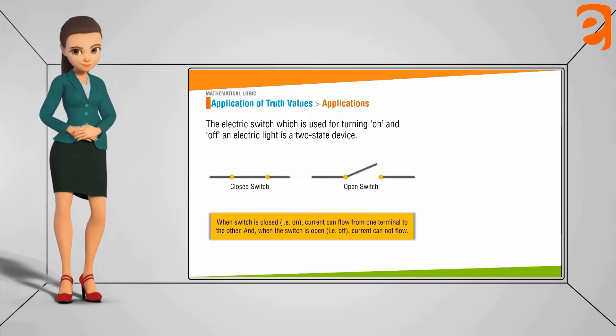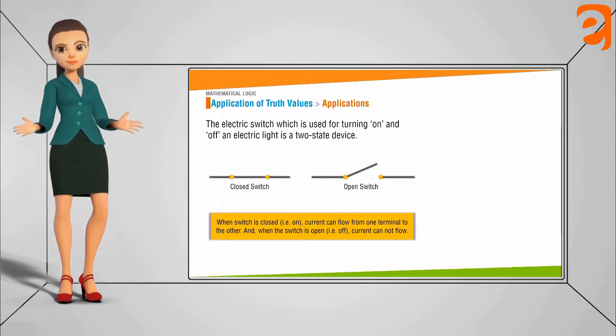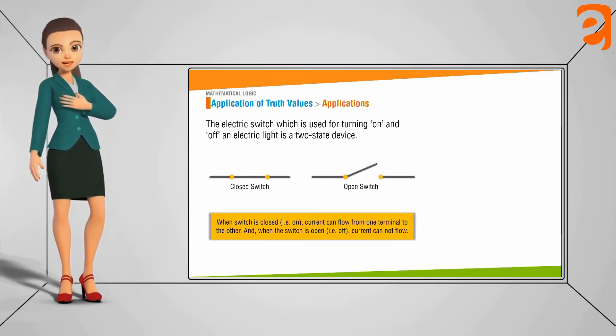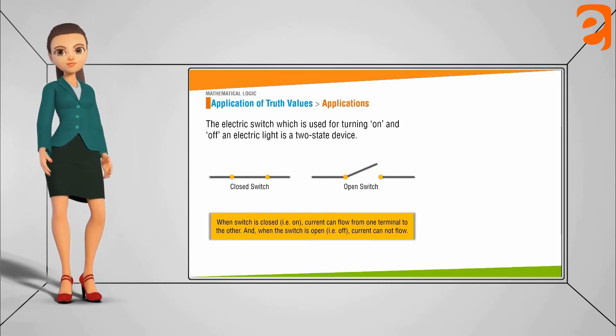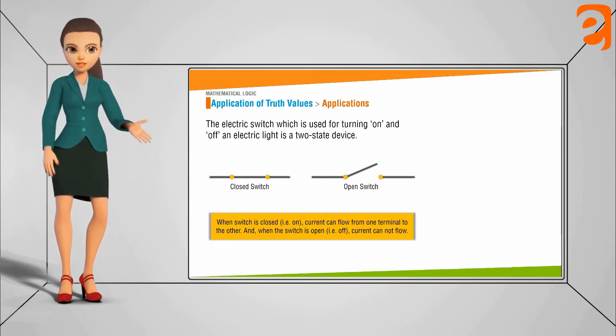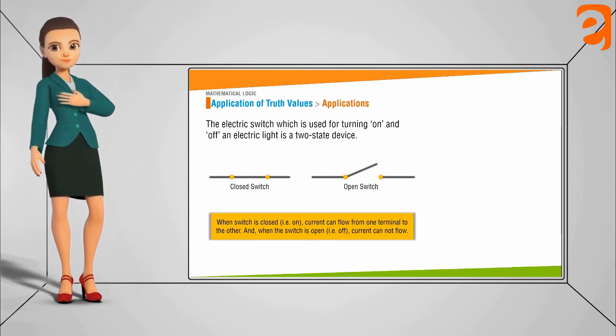The electrical switch which is used for turning on and off an electrical light is a two state device. Look at the figure here. One is a closed switch and another is an open switch. When a switch is closed, that is on, the current will flow from one terminal to another one. And the second one, when the switch is open, this means that the switch is off and the current cannot flow.